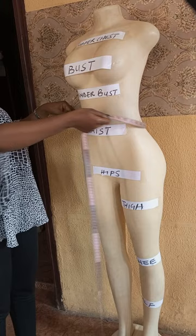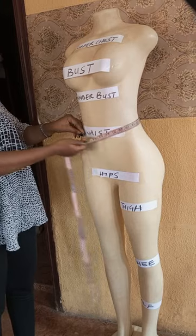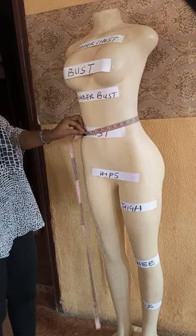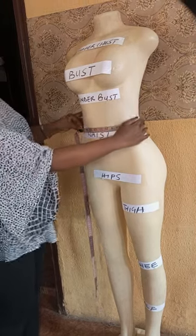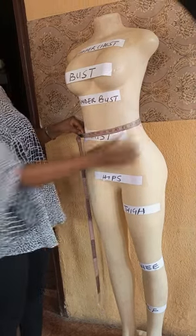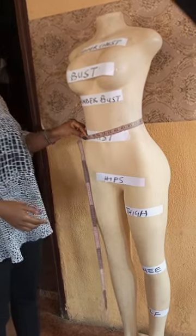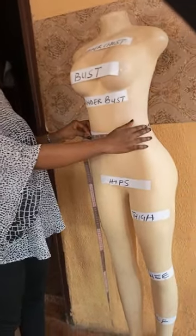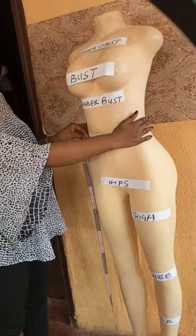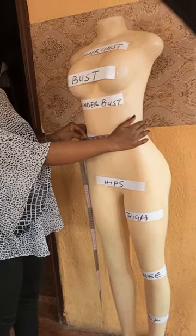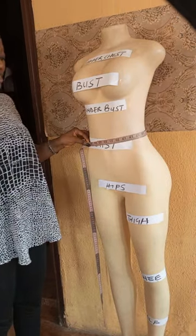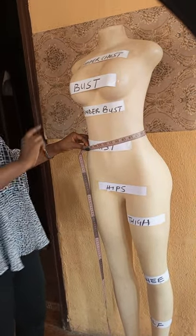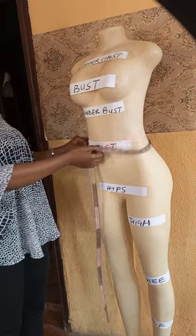Then we move to the waist area. Measure your waist circumference — measure it around. Whatever you get, make sure that it is not too tight and not too loose. Write down whatever it is you get as your measurements.